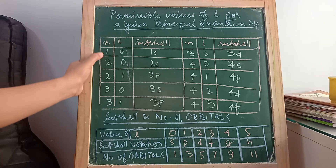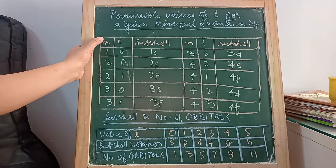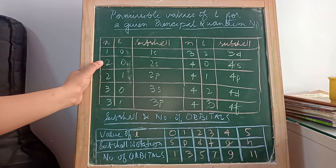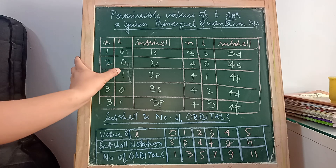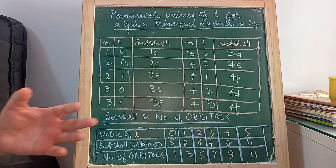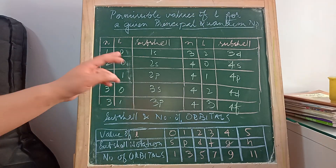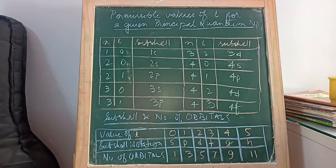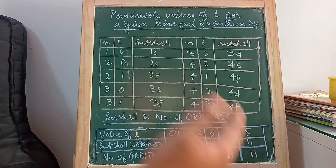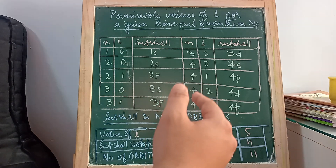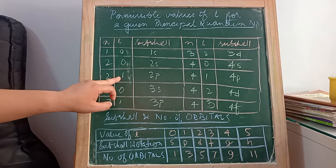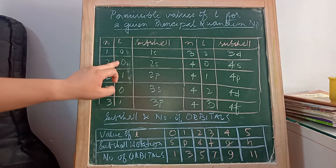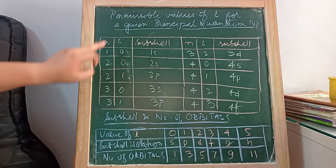For the principal quantum number N equal to 2, the possible values of L will be 0 and 1. Remember the value of L depends on the value of N, and it will range from 0 to N minus 1. So for N equal to 2, there are 2 possible values of L: 0 and 1.